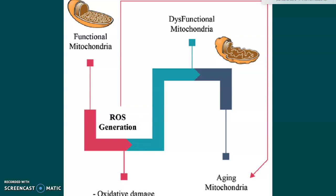Dysfunctional mitochondria can lead to different diseases — it's central to heart disease, cerebrovascular disease, diabetes, Alzheimer's, Parkinson's disease, cancer, and premature aging. All of this can be tracked back to dysfunctional mitochondria, so it's important to take good care of these organelles.